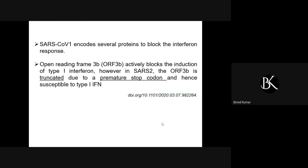SARS-1 encodes several proteins to block the interferon response required to combat any viral infection. Since SARS-2 closely resembles SARS-1, we thought SARS-2 might use the same mechanism to block interferon. The protein responsible was the open reading frame 3b (ORF3b), which actively blocks the induction of type 1 interferons. Fortunately, in SARS coronavirus 2 the ORF3b is truncated to a premature stop codon, and hence SARS-CoV-2 viruses are actually susceptible to type 1 interferon — which is a good thing for us.